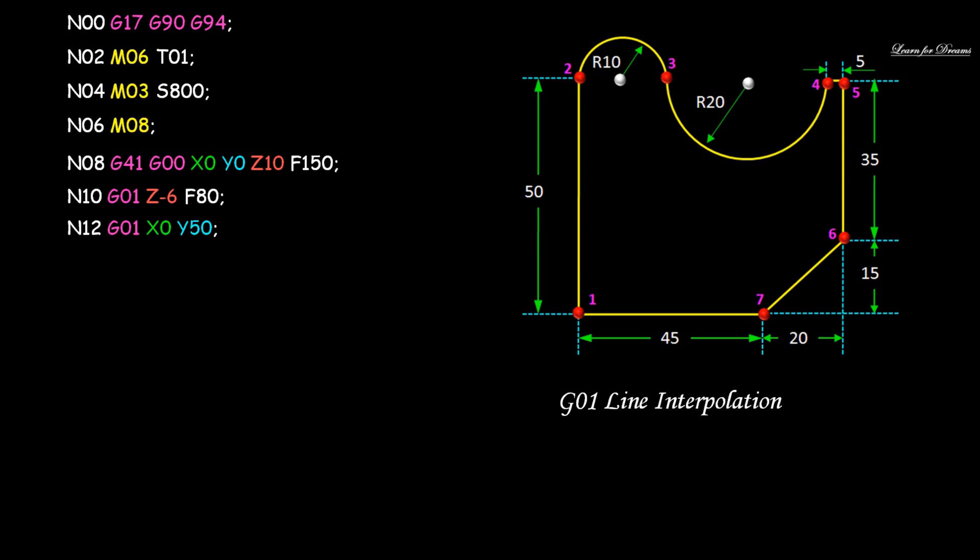Then the tool will move to point 2: N12 G01 X0 Y50. From point 2 to point 3, the main circular path begins. For point 2 to point 4, the main circular path uses radius values — here we have given incremental circular I/J values.